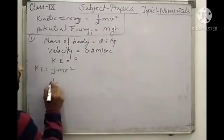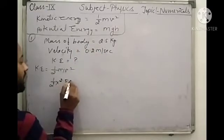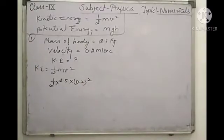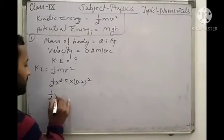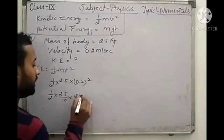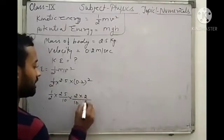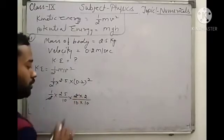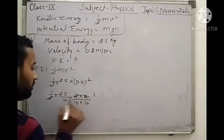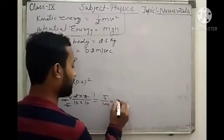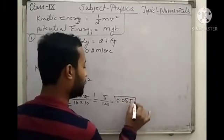Now put in the values: 1 upon 2, mass is 2.5, velocity is 0.2 squared. When you solve this, if you have decimal values, the first task is to handle the decimal point. Working through the arithmetic: (1/2) × 2.5 × (0.2)² gives us 5 upon 100, which we can write as 0.05, and the unit of energy is Joule.